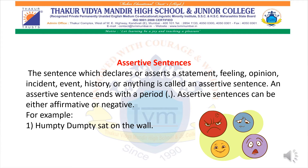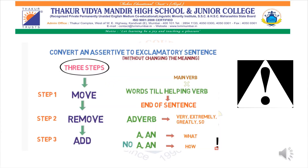A negative form is also expressed in assertive sentences. For example: 'Joe is here' would be an affirmative sentence, while 'Joe is not here' would be a negative sentence. For example, 'Humpty Dumpty sat on the wall' — this particular sentence is just a statement, and therefore it is known as an assertive sentence. Today we shall study how to convert, and it is going to be very easy for you all. Let's study how to convert an assertive to an exclamatory sentence without changing the meaning.